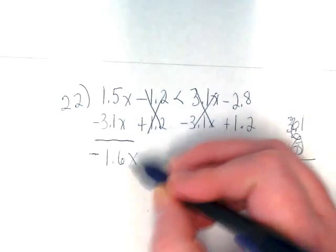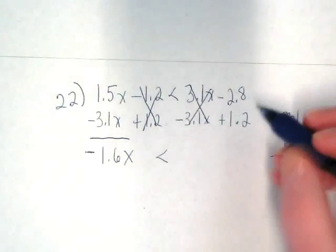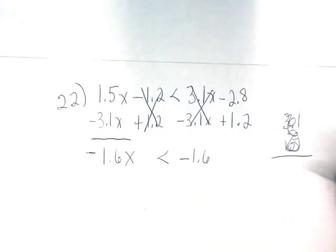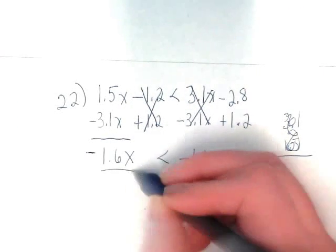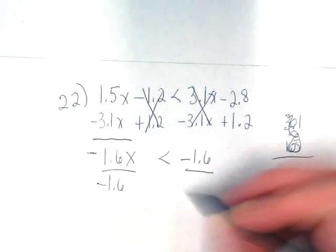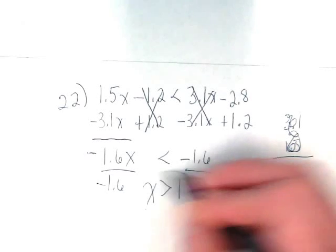So we have negative 1.6x. I don't have any calculators because I lent them to the testing. This is going to be negative 1.6 and how convenient when I divide that we're going to end up with a positive one. The thing is we're dividing this out and it is negative so we have to remember to flip the symbol so our answer is x is greater than one.